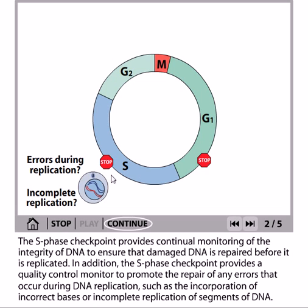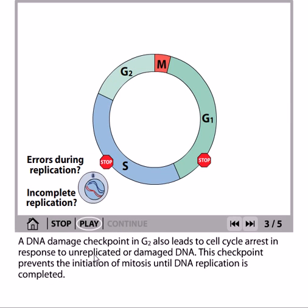If anything wrong is detected, the phase will stall and the cell will go through DNA repair systems, or sometimes go back to an earlier stage and not divide. The S phase checkpoint provides a quality control monitor to promote repair of any errors that occur during DNA replication, such as incorporation of incorrect bases or incomplete replication of segments of DNA. If everything is okay, the DNA passes through S phase and continues.